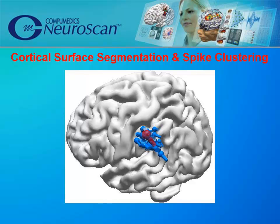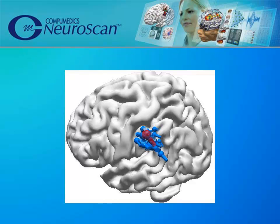The red dipole is the solution for the average of all the spikes, while the blue dipoles represent the location for individual spikes. Confidence ellipsoids depict the one standard deviation confidence volume for location, and can be calculated for individual or average spikes, allowing the clinician to determine the validity of the result.